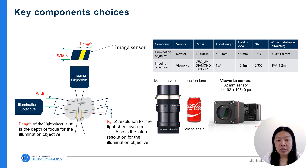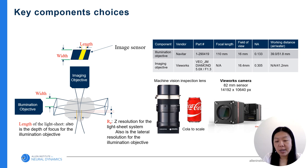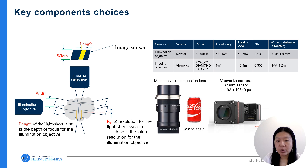Here are our choices for these three key components. Specifically, using a machine vision inspection objective as our imaging objective, combined with a camera that has 10 times larger pixel count compared to typical scientific CMOS cameras, the system achieves 0.75 microns per pixel, near isotropic resolution, and an 11 by 8 millimeter field of view.